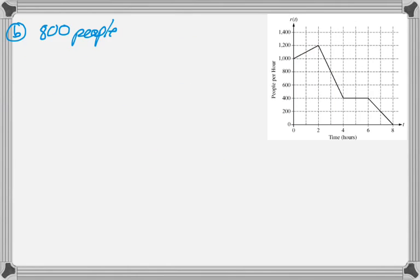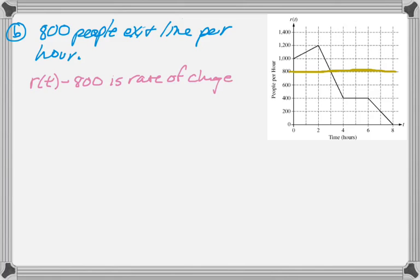The next question is, is the number of people increasing or decreasing at t between 2 and 3? So there are 800 people leaving the line per hour, that's given in the problem. And so what I'm going to do is add that line to the graph. I know that R of T minus 800 is the total rate of change in the line.